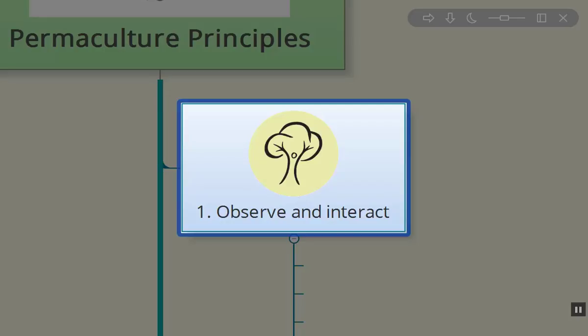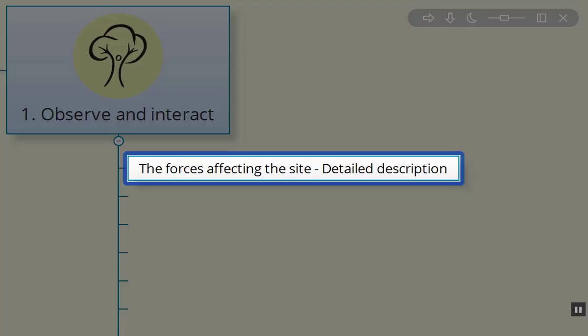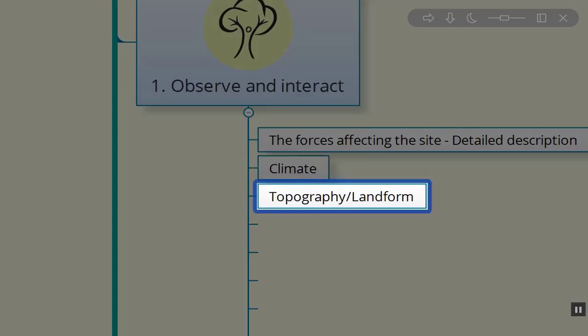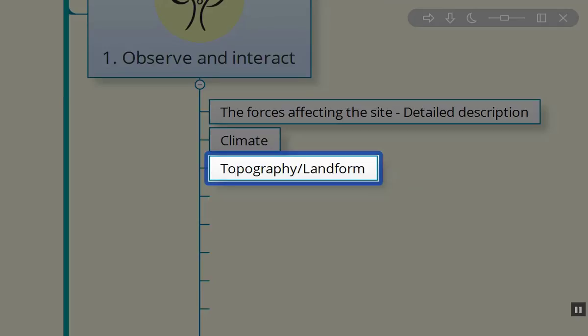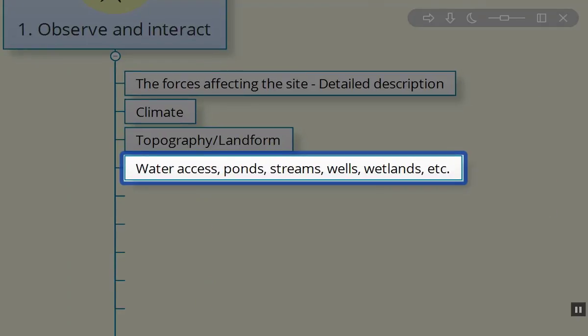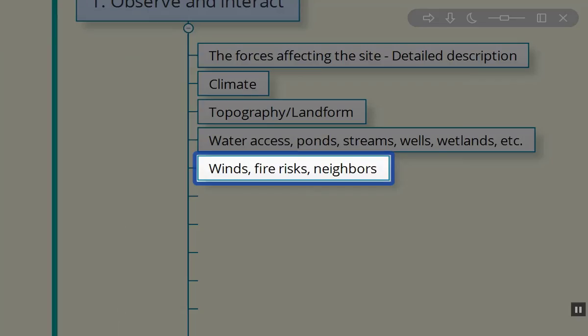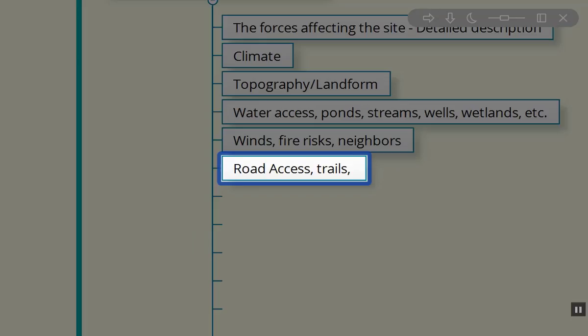Observe and interact is the first permaculture principle. We want to take into account from our sector analysis and look at those forces that come onto our properties or sites we're going to be working at. Take a list, create a detailed list of all of these factors coming into the system. Certainly the climate, where we are in the world, the topography, the landform, the shapes, the hills, the slope, the water access, the ponds, the streams, the wells, the wetlands, the winds, the potential fire risks, the neighboring systems, how everything's going to affect us on site. The road access, the trails on the site, trees, forests, woodlots.